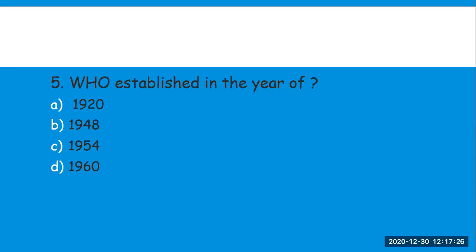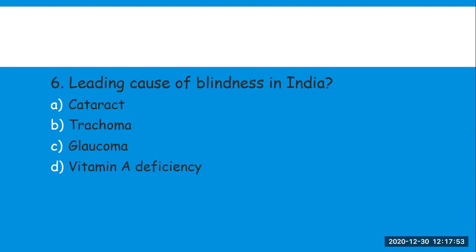Next question: WHO was established in which year? The full form of WHO is World Health Organization, and every 7th April we celebrate World Health Day. Options are: 1920, 1948, 1954, and 1960. Please remember — this is a very important question — WHO was established in the year 1948.